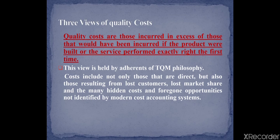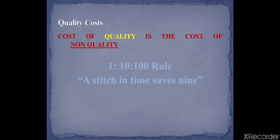There is another view of quality cost. Costs are those that would not have been incurred if the product were built or the service performed exactly right the first time. This view is held by the inheritors of TQM philosophy. Costs include not only direct costs but also those resulting from lost customers, lost markets, and hidden or forgotten opportunity costs not identified by modern cost accounting systems.